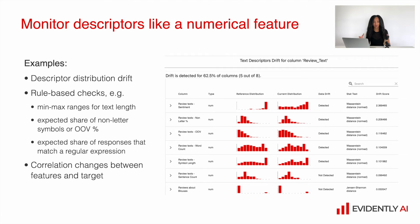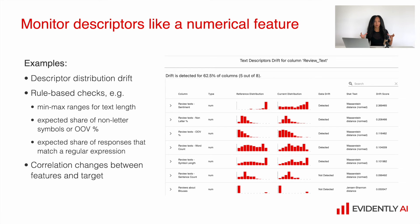Basically, we can measure descriptor distribution drift. We can use rule-based checks like min-max ranges for our text lengths, maybe an expected share of non-letter symbols, maybe a specific share of responses that match a regular expression, or maybe the share of outputs which are correct JSONs or have positive sentiment.